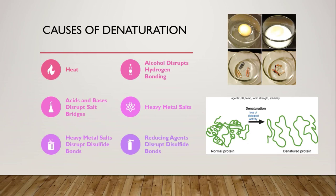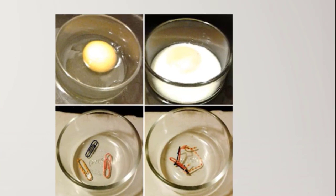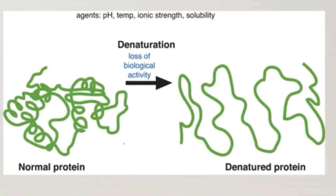Now we have the agents that can cause denaturation. First of all, heat — egg albumin is a general example of denaturation by heat. Alcohols can disturb the hydrogen bonds between amino acids because alcohol is a polar compound and competes for hydrogen bonding. Acids or bases can also disturb the normal structure of proteins by altering the ionic interactions within the protein.